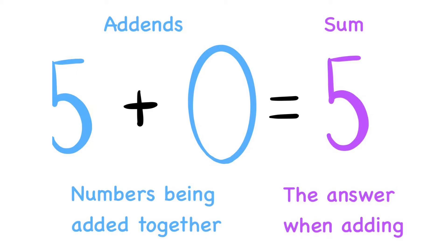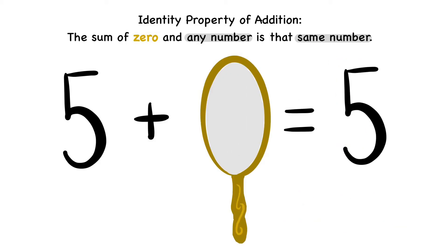Now, let's take a look at the definition. The identity property of addition states that the sum of 0 and any number is that same number.